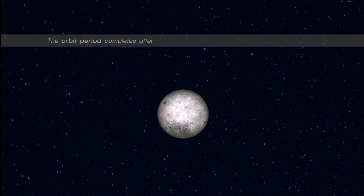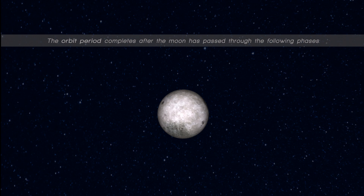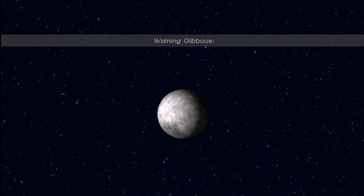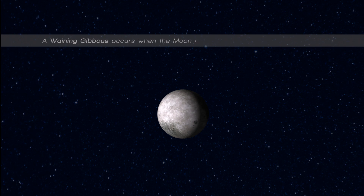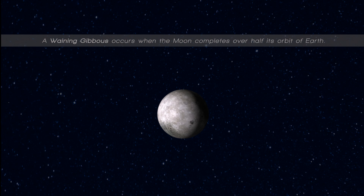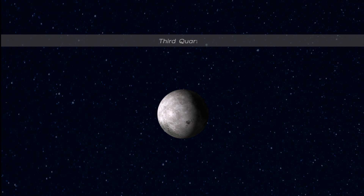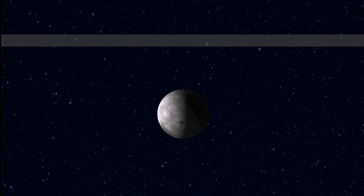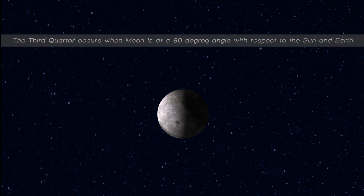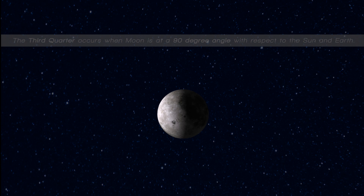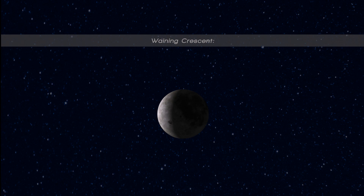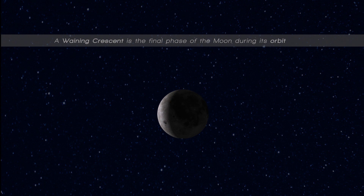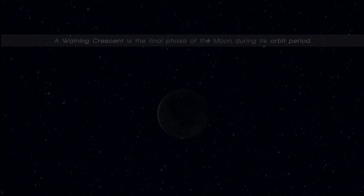The orbit period completes after the moon has passed through the following phases. Waning gibbous occurs when the moon completes over half its orbit of earth. The third quarter occurs when the moon is at a 90 degree angle with respect to the sun and earth. A waning crescent is the final phase of the moon during its orbit period.